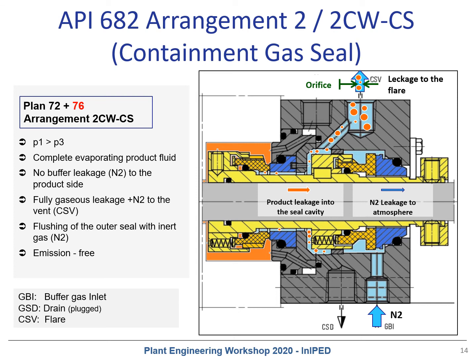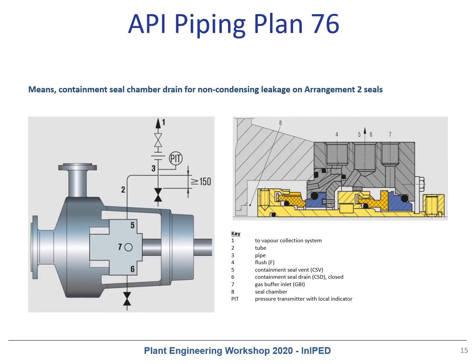The same seal configuration can also be combined with piping plan 72 plus 76. Piping plan 76 is used for hydrocarbons which fully vaporize in the containment seal cavity and are then vented to the flare system. Piping plan 76 is defined as a containment seal chamber drain for non-condensing leakage on an arrangement 2 seal, meaning the leakage is sent to flare to minimize process emissions to the atmospheric side.